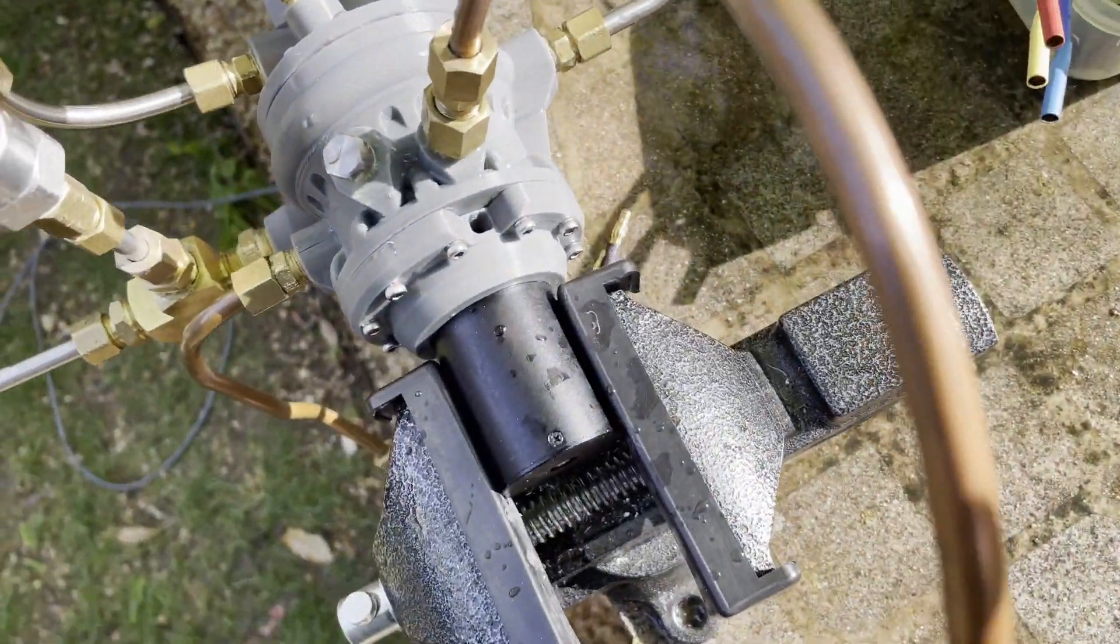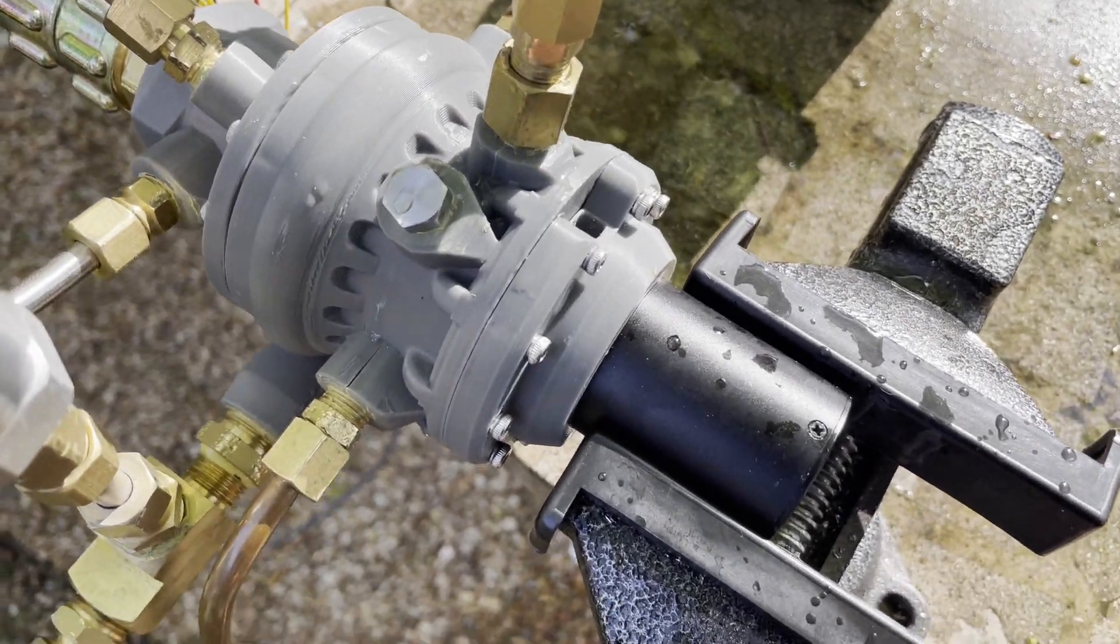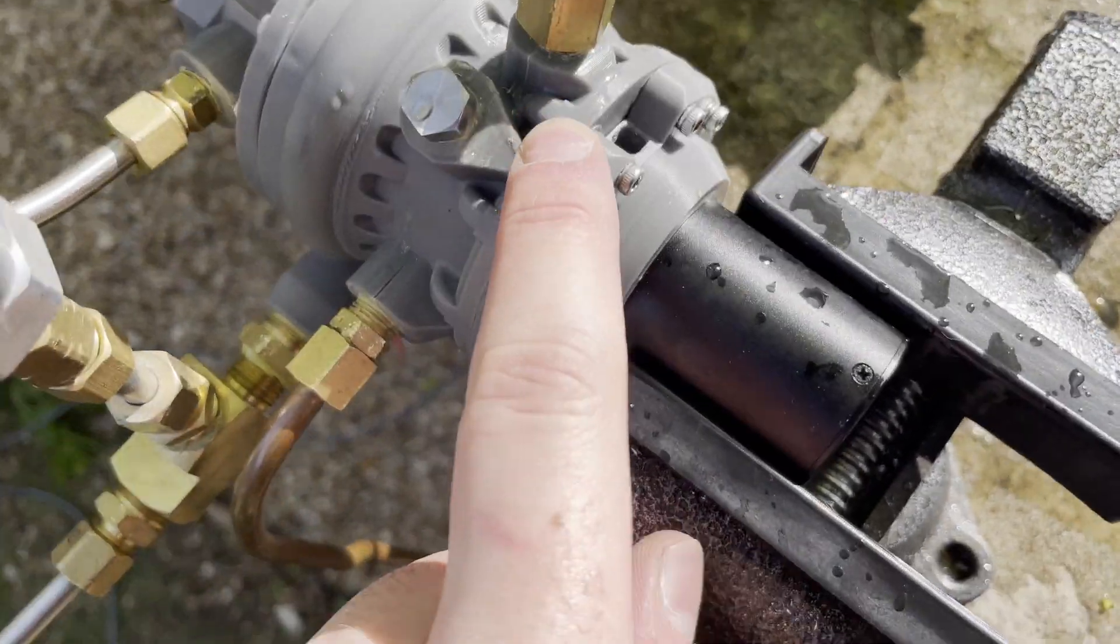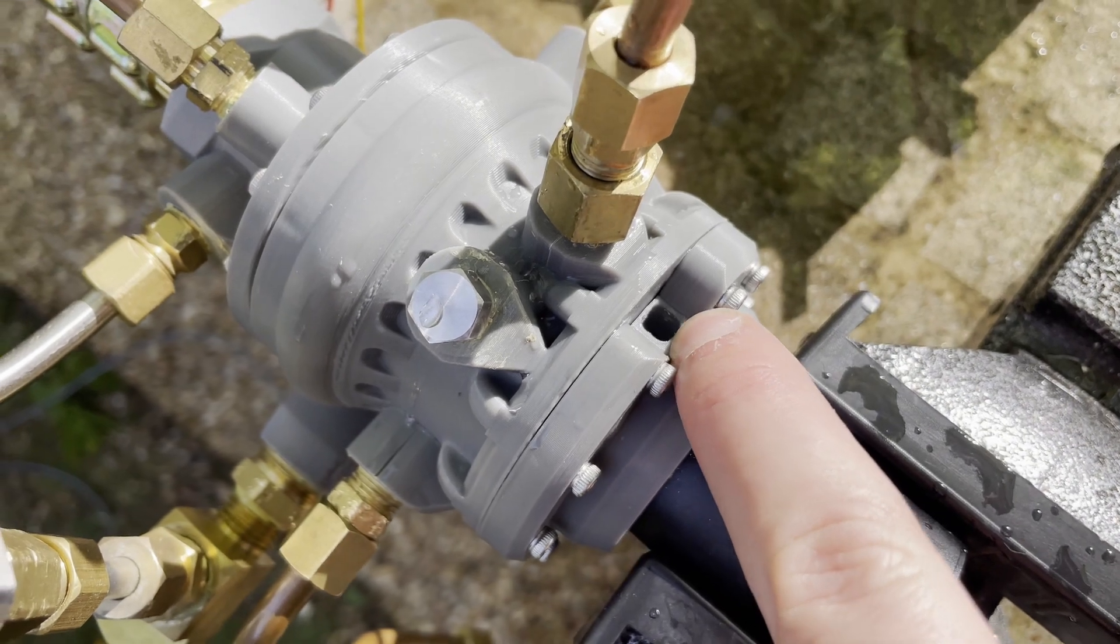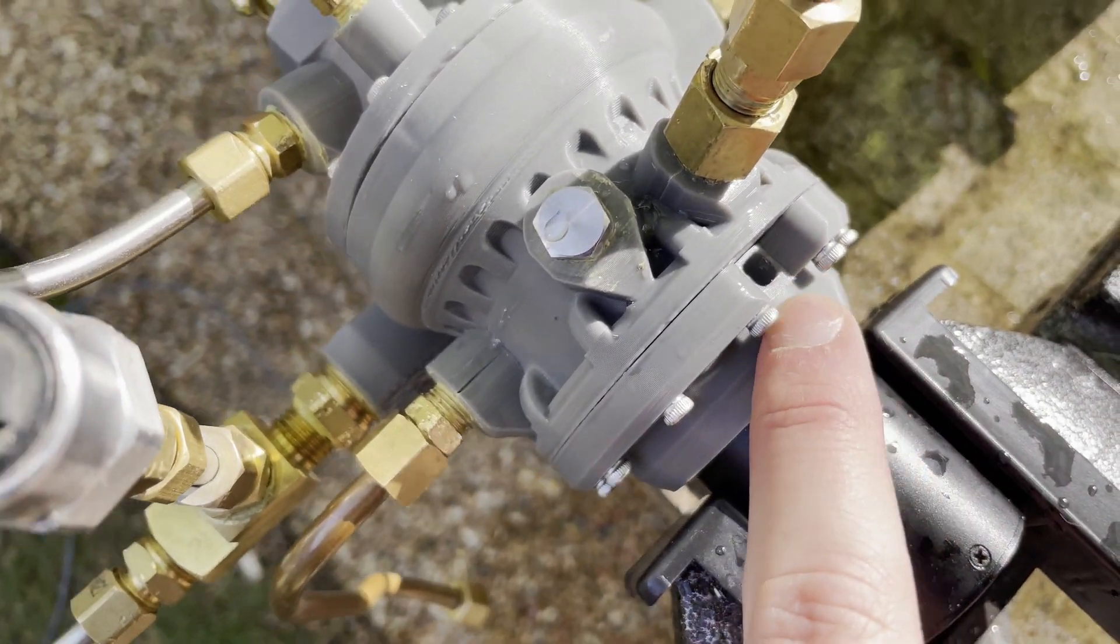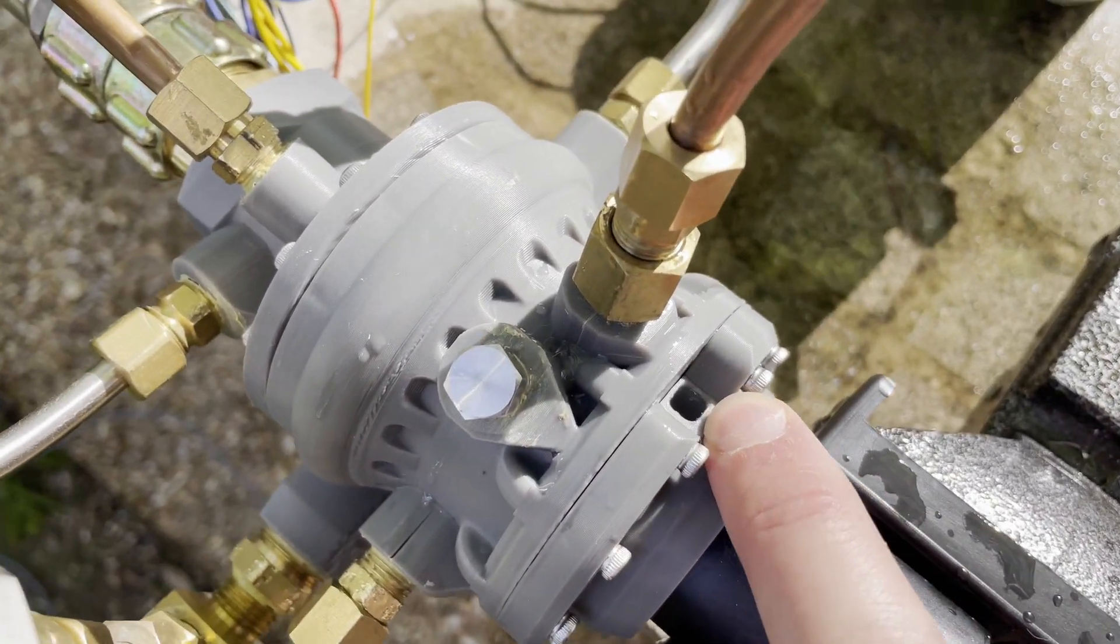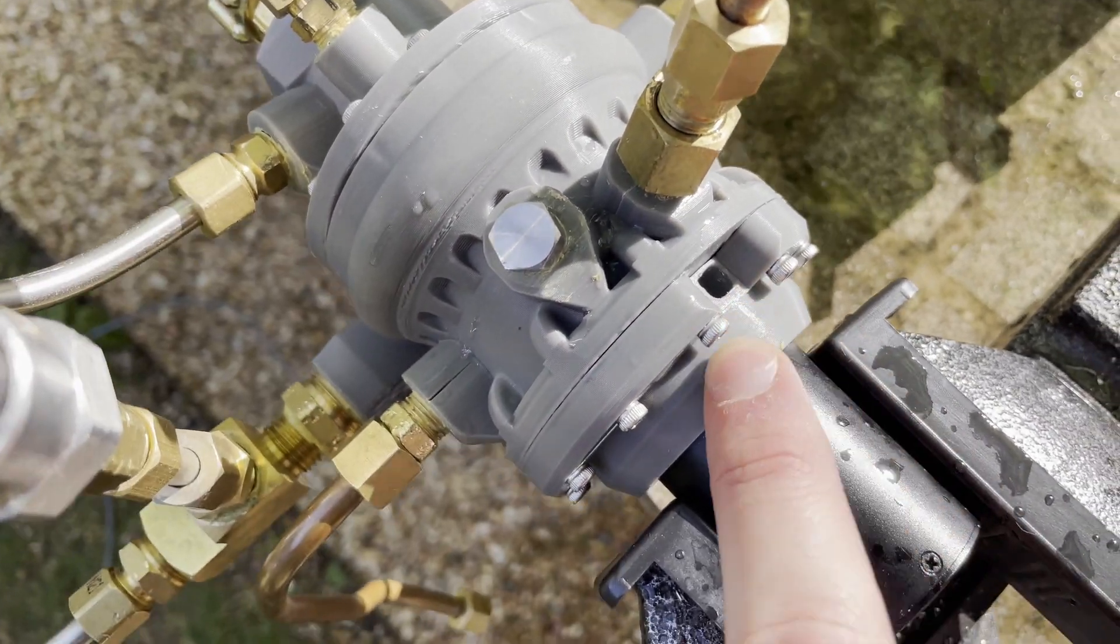So I ended up playing with the pressures a little bit and ran into an issue which is that a lot of the purge gas flows backwards through this hole. This hole was necessary to include so I can tighten the set screw on the shaft, but it's basically preventing the purge from building pressure.